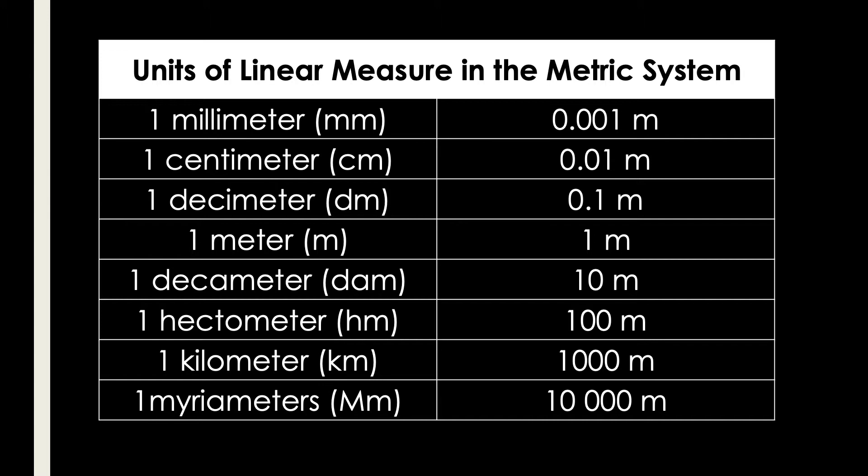In one dekameter, we have 10 meters. In one hectometer, we have 100 meters. In one kilometer, we have 1,000 meters. And in one area meter, we have 10,000 meters.